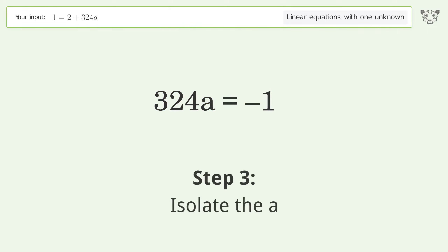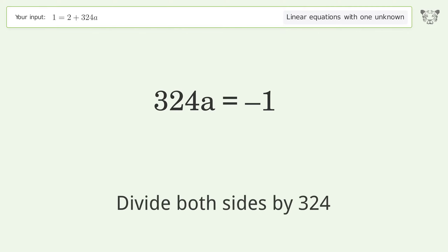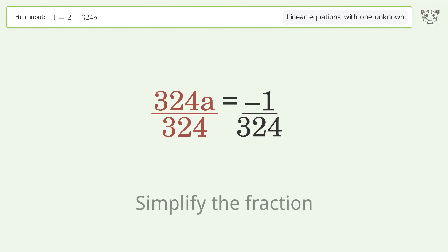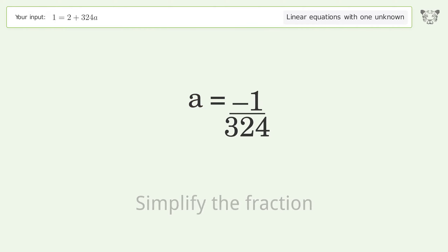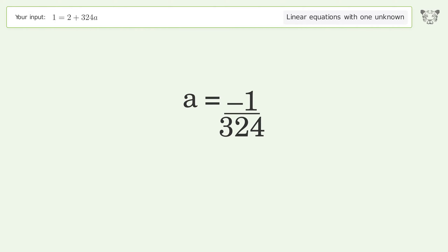Isolate the a — divide both sides by 324. Simplify the fraction. And so the final result is a equals negative 1 over 324.